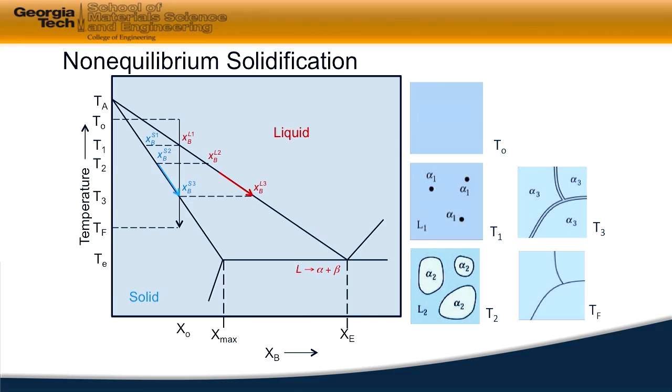So if we start up at temperature T0, T0 represents the temperature where all my liquid is a homogeneous liquid. I'm above the liquidus line. And what I'm going to do is cool it down along the direction of the arrow. For this particular case, I'm going to cool under equilibrium conditions.